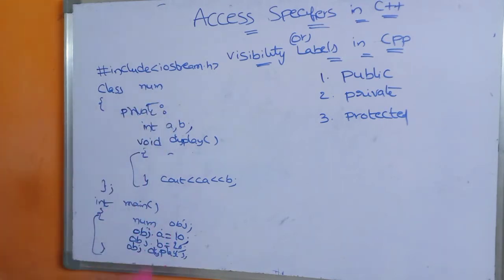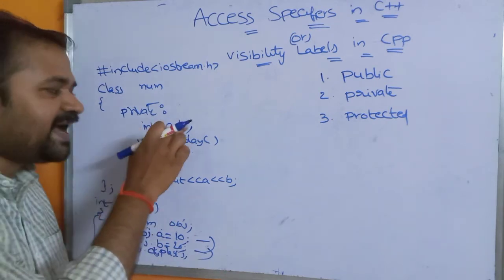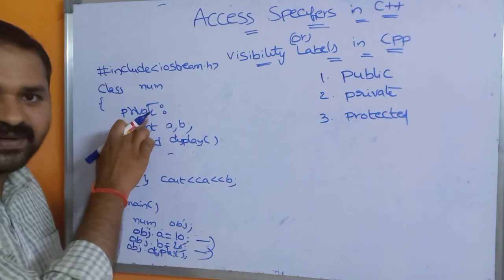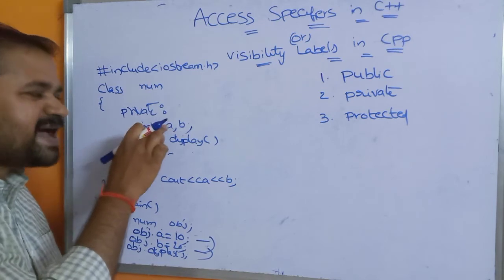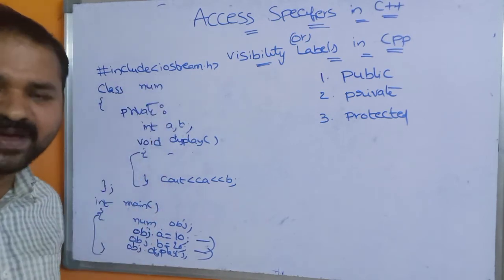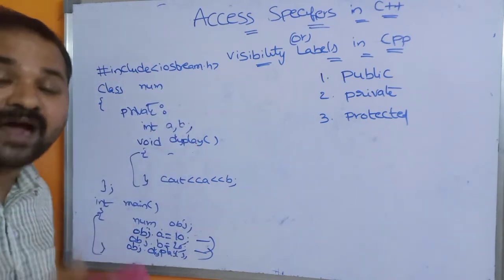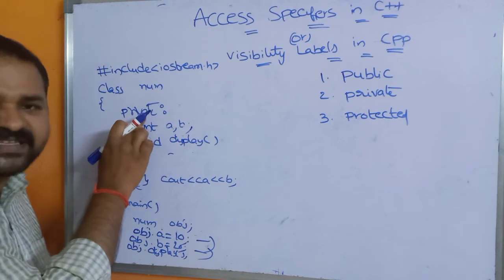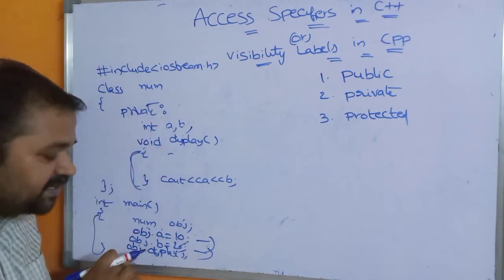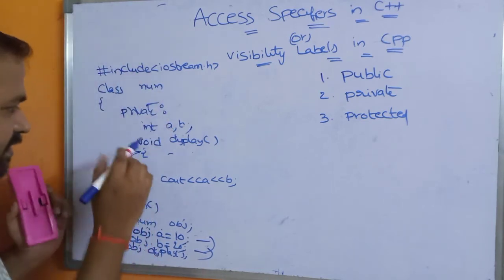Now let's see about the private access specifier. If a and b are declared under the private section and we write obj.a = 10 and obj.b = 20 in main, the compiler will display an error message. This is because a and b are private members. We can access private members from only inside the class. We also cannot call a private display function directly from main.